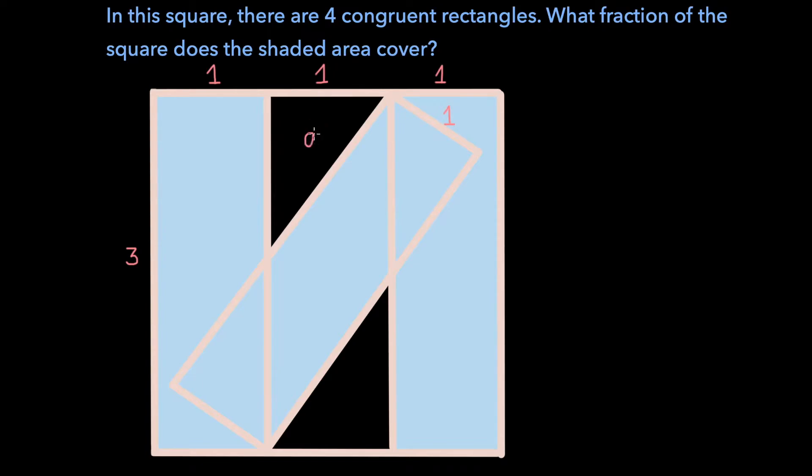If we call the area of these two identical right triangles A, the area of these two identical right triangles B, and the area of this shape in the center C,